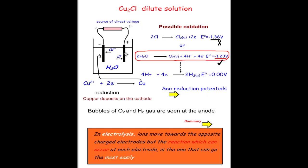Coming back to the dilute copper chloride solution: the overall result is copper depositing on one electrode, bubbles of oxygen produced at the anode, and bubbles of hydrogen on the other side. In electrolysis, ions move toward the oppositely charged electrodes, but the reaction that occurs at each electrode is the one most easily achieved. In this case that is the water oxidation reaction, and the standard reduction potential values confirm this.